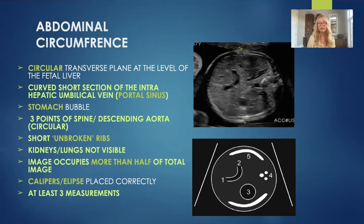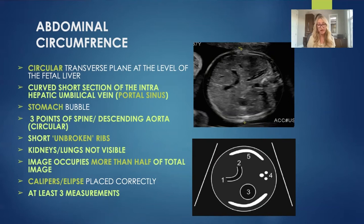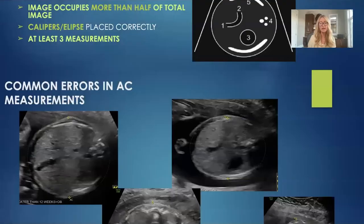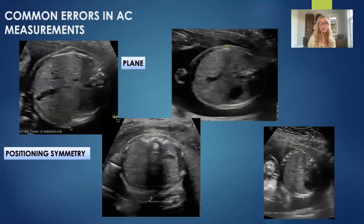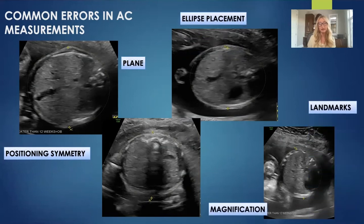Those three measurements should be fairly similar to one another. If they're really drastically different, you're probably over-measuring. I do take at least three measurements, sometimes more depending on position and accuracy. Depending on your facility, some take an average of those measurements, and some will prefer to use the most accurate and best-positioned one, which is what we tend to do in our facility. The more common variations we come across in AC measurements include plane, positioning and symmetry, ellipse placement, landmarks, and again — magnification. The most common one I come across is that oblique plane: if you're seeing too much of that umbilical vein or it's too close to that anterior surface of the abdomen, it's going to be over-measured.